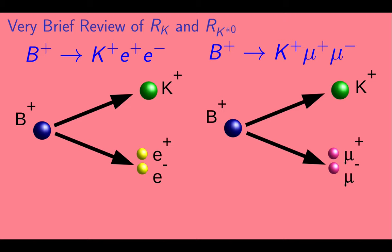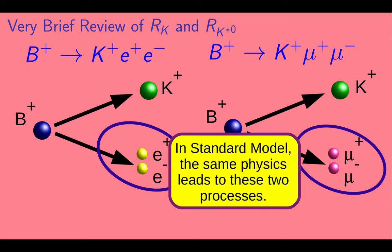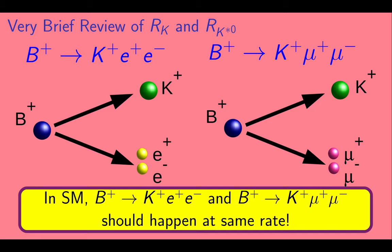So here we show those two possible decays. In each case, the B plus decays to a K plus and a pair of leptons, which can be E plus E minus or mu plus mu minus. In the standard model, the same physics leads to these two processes, which is an example of lepton universality.